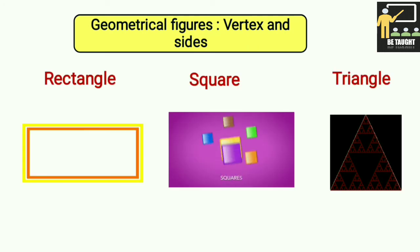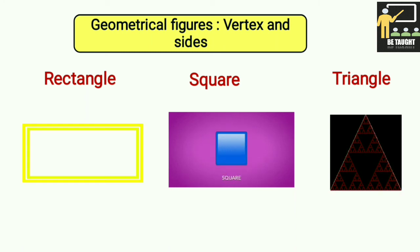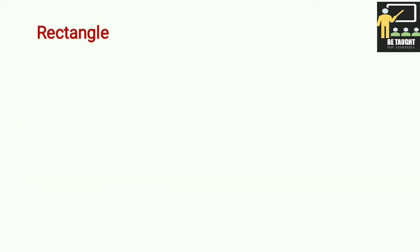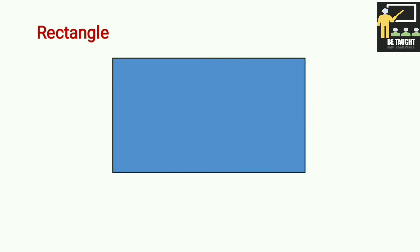Now we shall learn about geometrical figures — the vertices and sides of a rectangle, square, and triangle. Rectangle: A rectangle has four edges, that is four sides. The points where the two sides meet is the vertex. In the figure, A, B, C, D are the vertices.